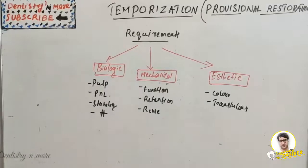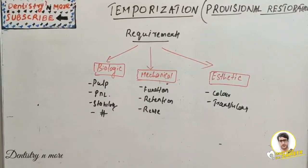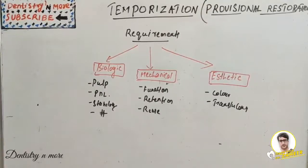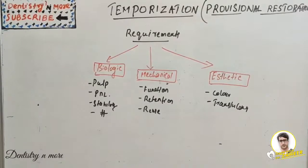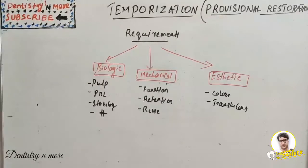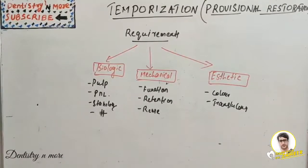Hello everyone, welcome back to another session in dentistry and more. We have a new topic from fixed partial denture — temporization or provisional restoration. This is a restoration we keep until a permanent restoration is received by the abutment tooth, because the tooth prepared to receive the retainer will be of compromised quality in aesthetics and mechanical function.